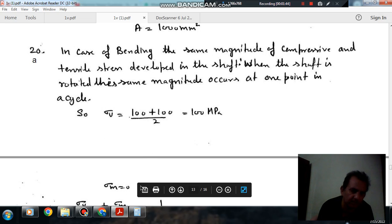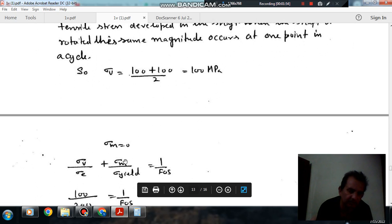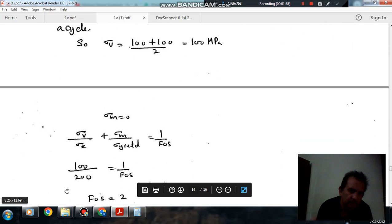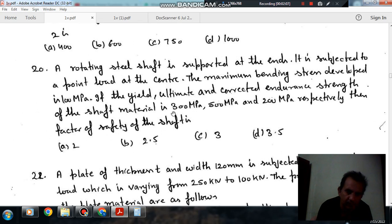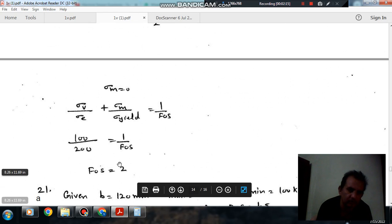The variable stress component is 100 MPa and the mean stress is 0. Now using the Soderberg formula, sigma_a over sigma_e plus sigma_m over sigma_y equals 1 over FS. We have sigma_m as 0, so sigma_a is 100 and sigma_e is 200 MPa. We can find out FS, which comes out to be 2.